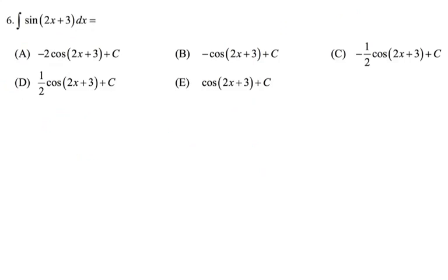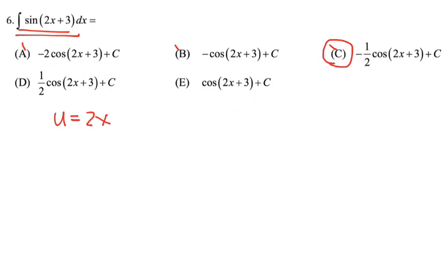Let's move on to number 6. The fact that we have sine as the integrand means the antiderivative is negative cosine. So our answer would be either choice a, b, or c. But by the chain rule, or using u-substitution with u as 2x plus 3, taking the derivative would bring out a factor of 2. Since we don't have a 2 in the integral, we divide by 2 — so choice C becomes our answer.